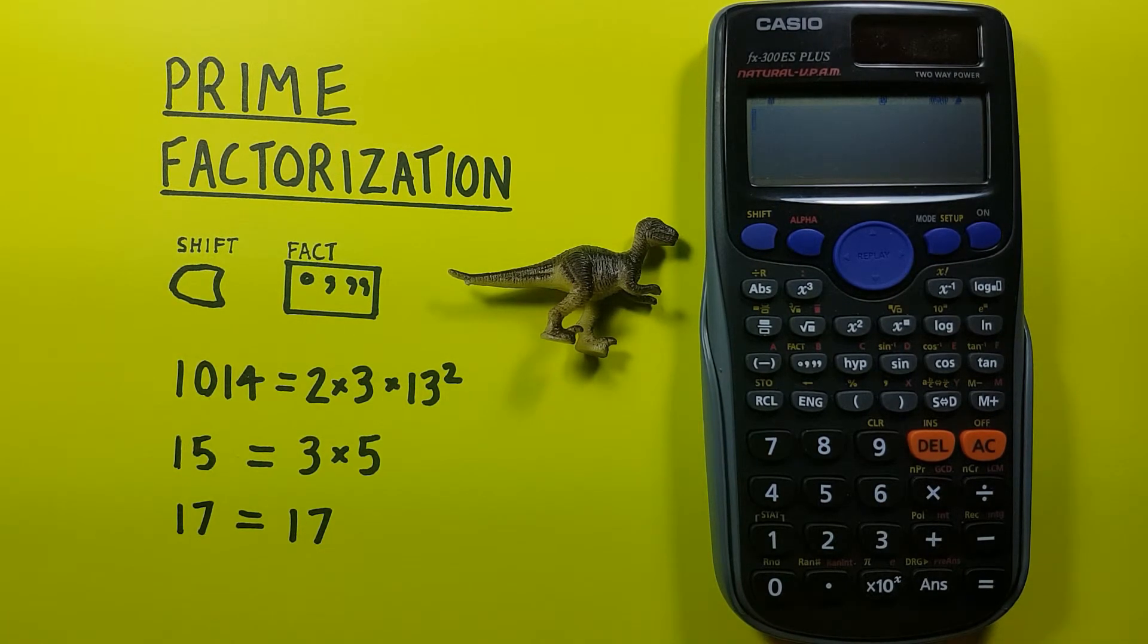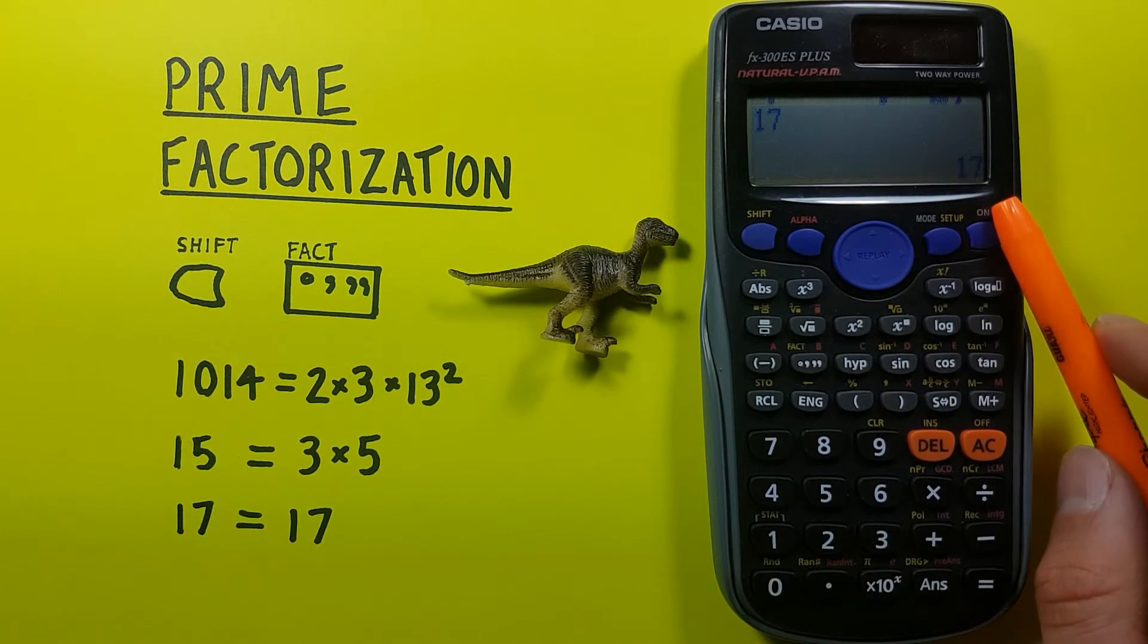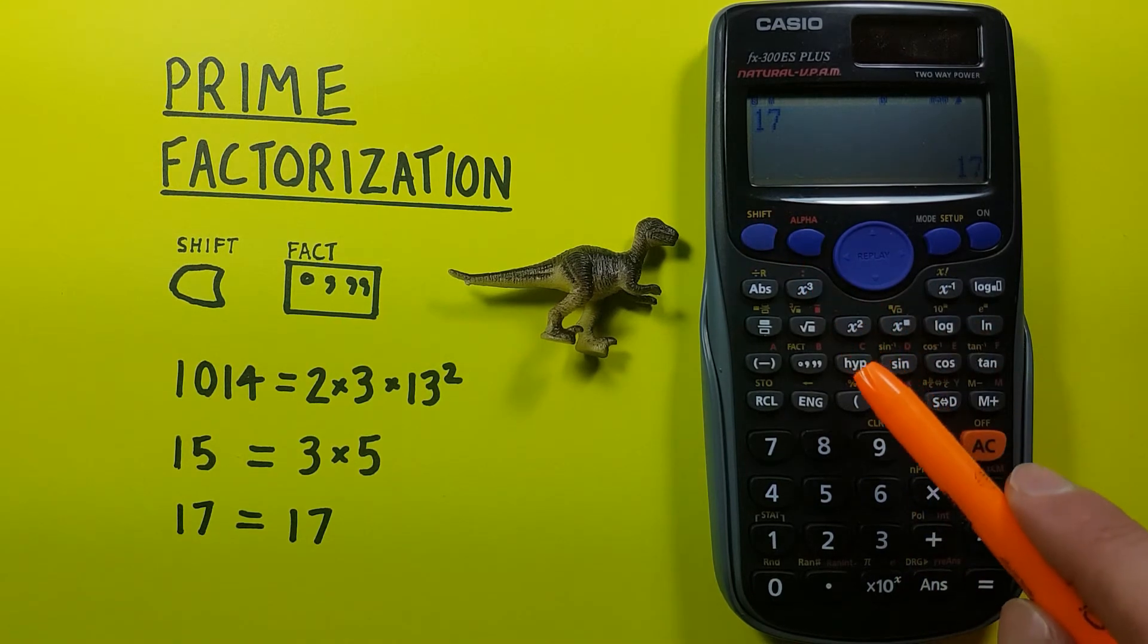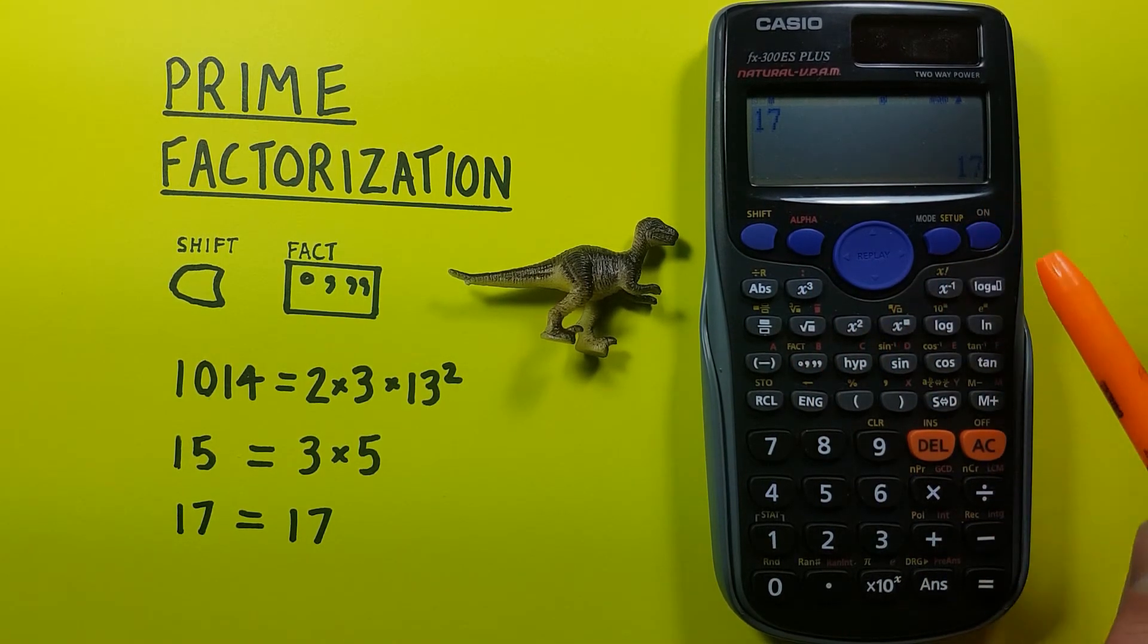What about 17? Place it on the screen, press equals so we have it in the bottom right corner again, and then we press shift degrees minute seconds. We see that nothing's changed, so that tells us this is already a prime number.